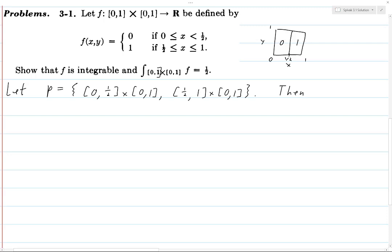We go through and have L(f,p). So then this is going to be m_{[0,1/2] × [0,1]}(f) times the volume of [0,1/2] × [0,1]